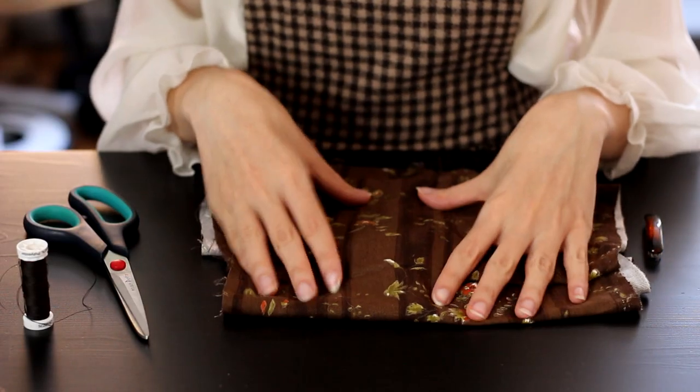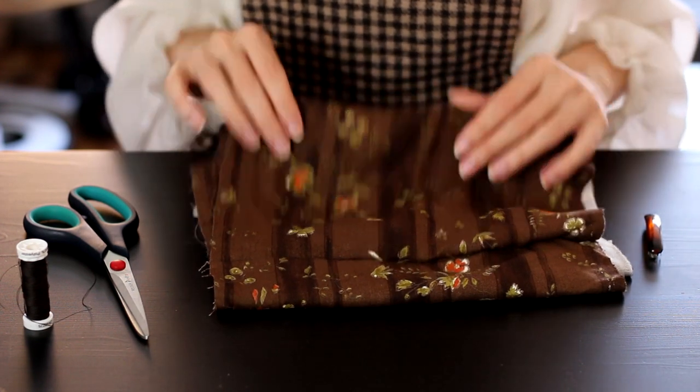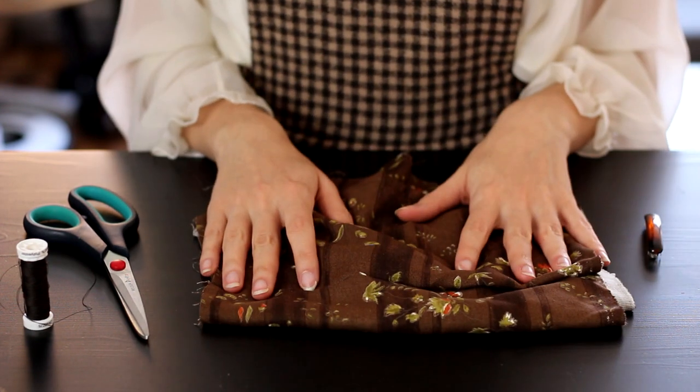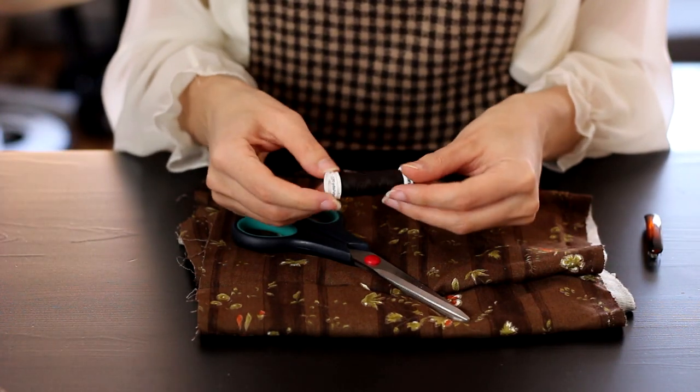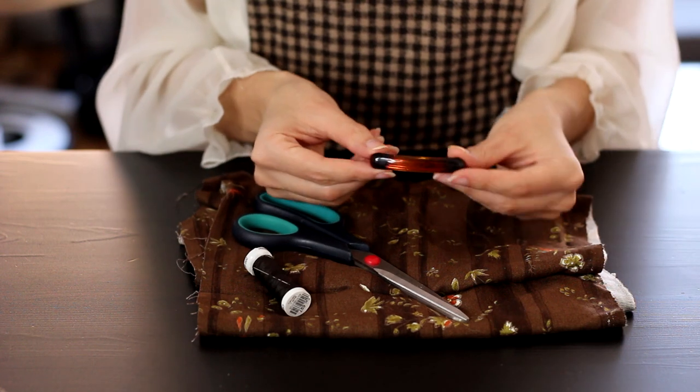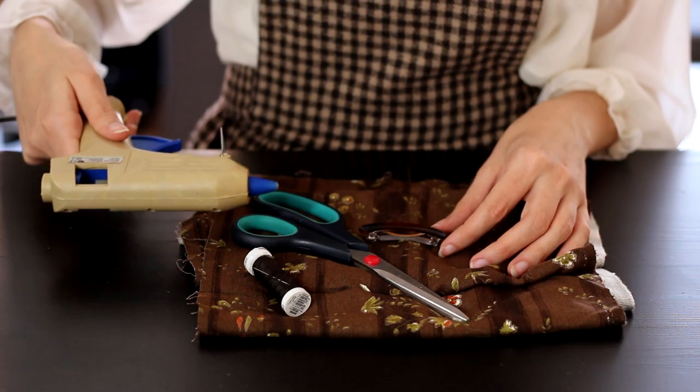For the first bow, we're going to need a fabric of choice. I have this really pretty brown with florals. We are going to need fabric scissors, needle and thread, the snap clip hair accessory, whatever you choose, and we're going to need a hot glue gun.